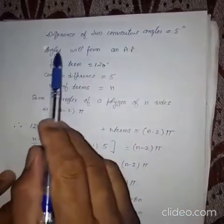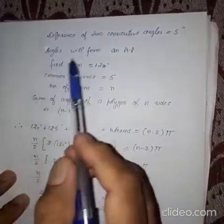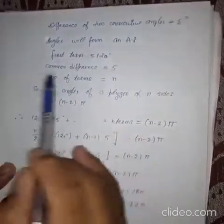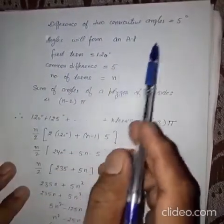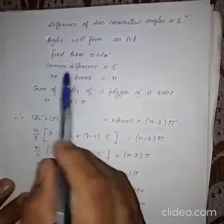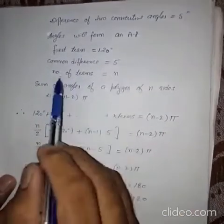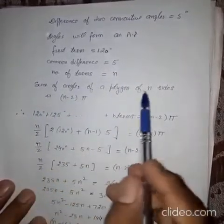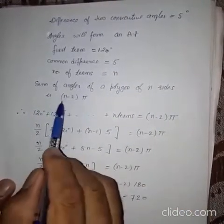Now, difference of two consecutive angles that is given 5. Now, these angles will form an AP. Because the first angle that is 120, and each angle that is 5 degree greater. So you see common difference that will be 5. Number of terms that is equal to N.